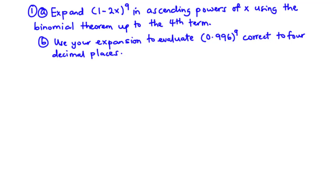Hello guys and welcome back to this channel. In today's video, we are going to look at the topic binomial expansion of approximations. Question 1A: Expand (1-2x)^9 in ascending powers of x using the binomial theorem up to the fourth term. Part B: Use your expansion to evaluate 0.996^9 correct to four decimal places.